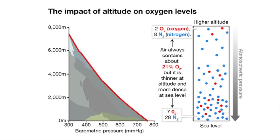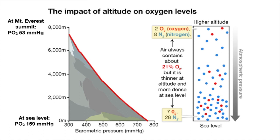To understand why this happens, you need to remember that air is not pure oxygen — nitrogen makes up about 78% of the atmosphere and oxygen 21%. This composition remains consistent whether at sea level or higher altitude. However, with higher altitude, the partial pressure of oxygen — how many molecules of oxygen are in a given volume of air — changes. At sea level, the partial pressure of oxygen is 159 mmHg, whereas at 8,848 meters above sea level, the summit of Mount Everest, it is only 53 mmHg. So at high altitudes, oxygen molecules are further apart because there is less pressure to push them together.